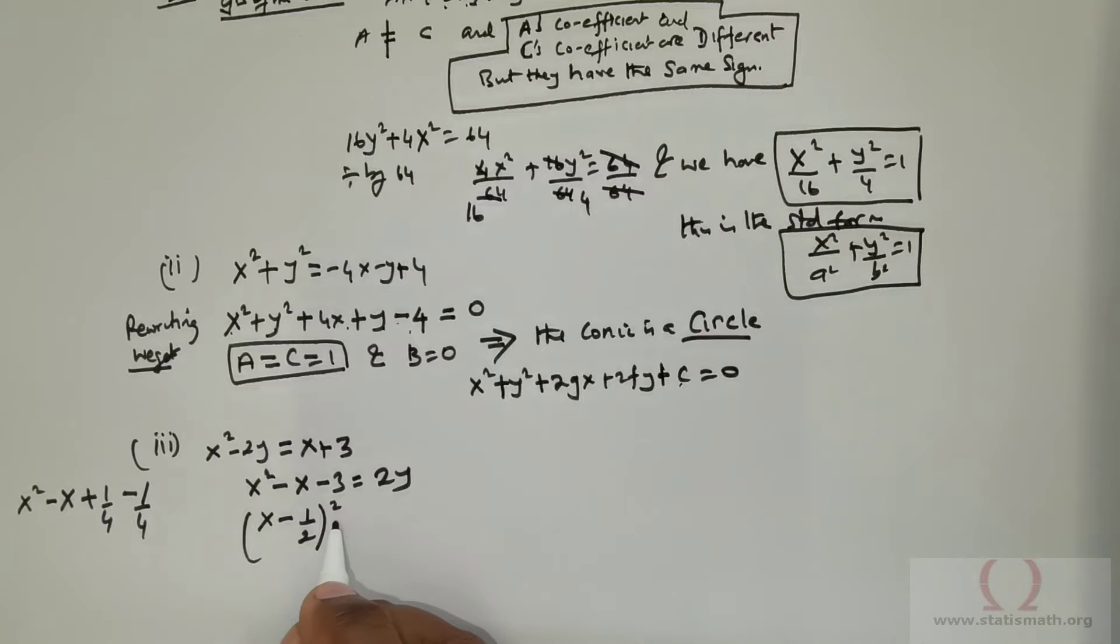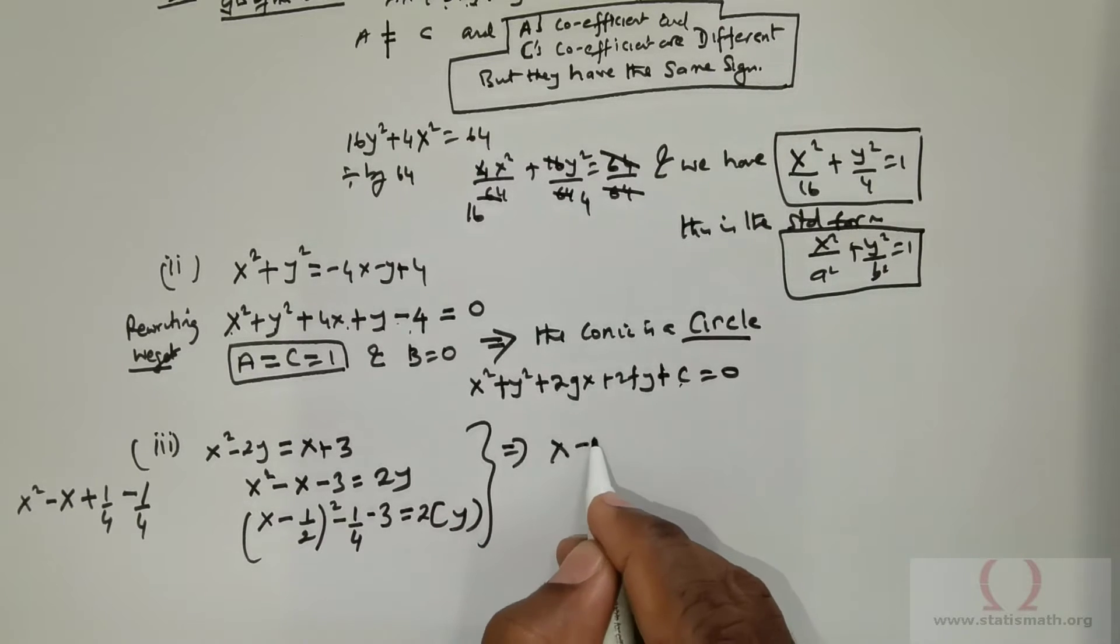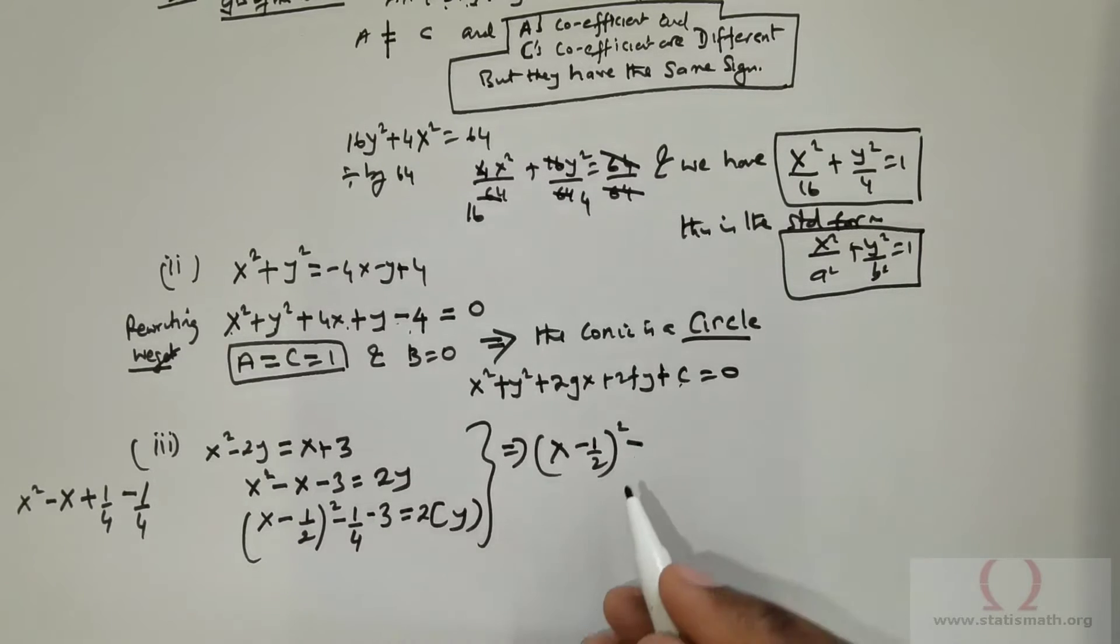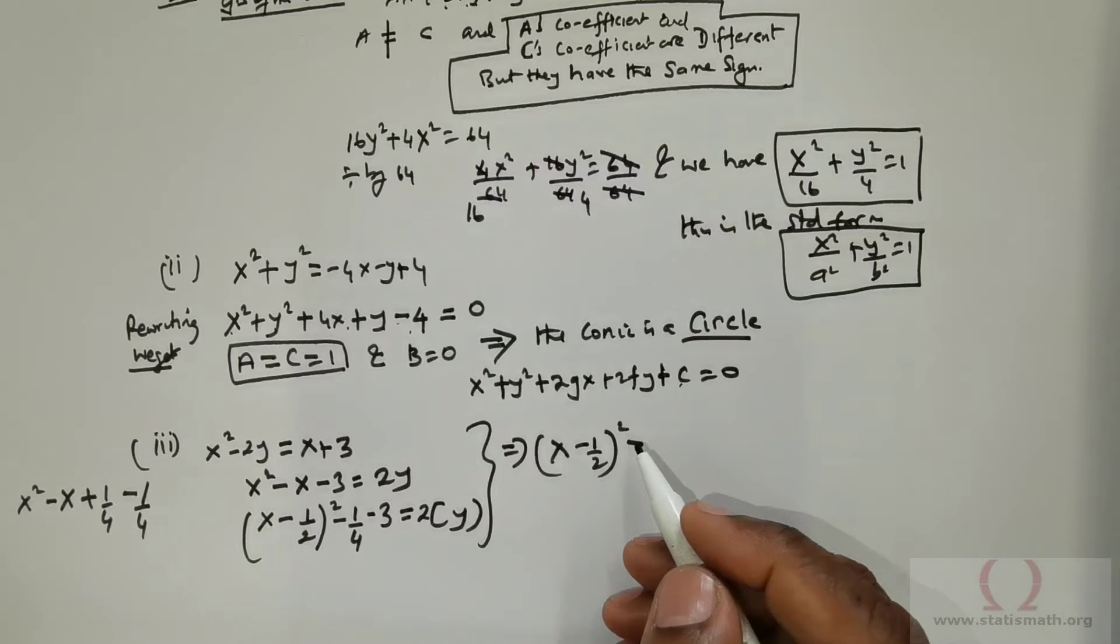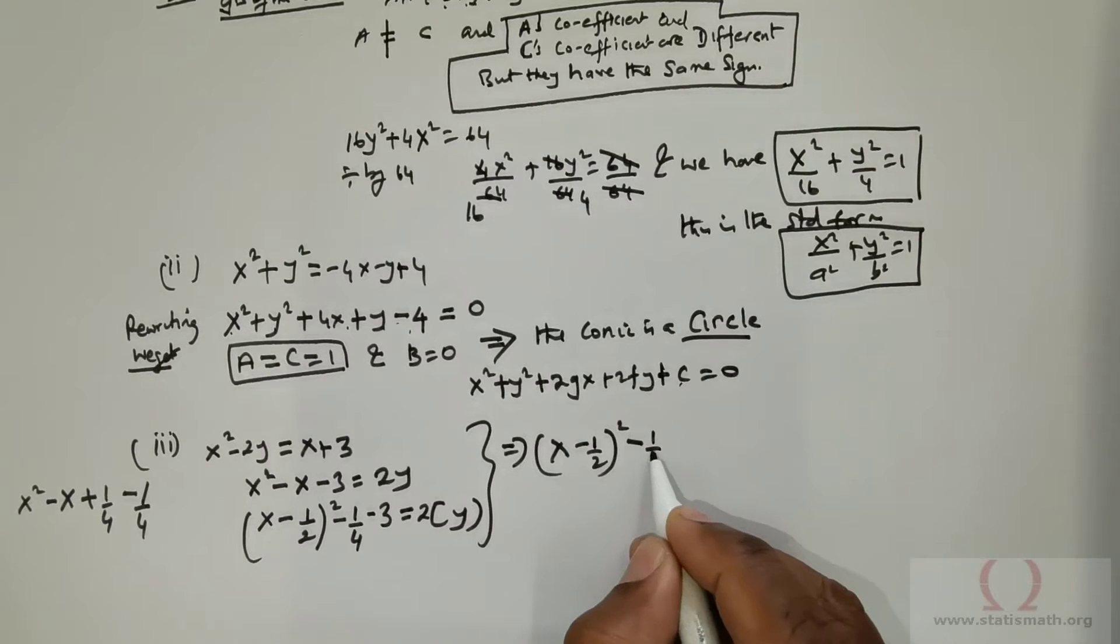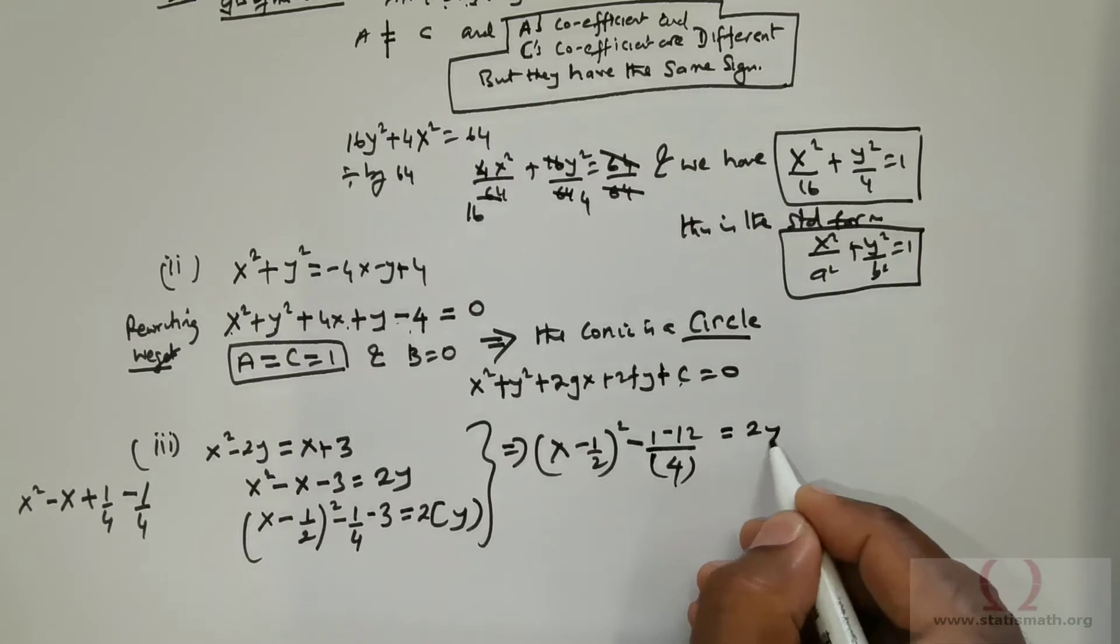But apparently, there is also a negative 3 there. So negative 1 over 4, and you can place negative 3 equals 2y. So if I were to rewrite this, I get x negative 1 over 2, raised to the power 2, negative. If I were to simplify this, this is going to give me 1 over 4. I take the LCM as 4. So negative 12 equals 2y.